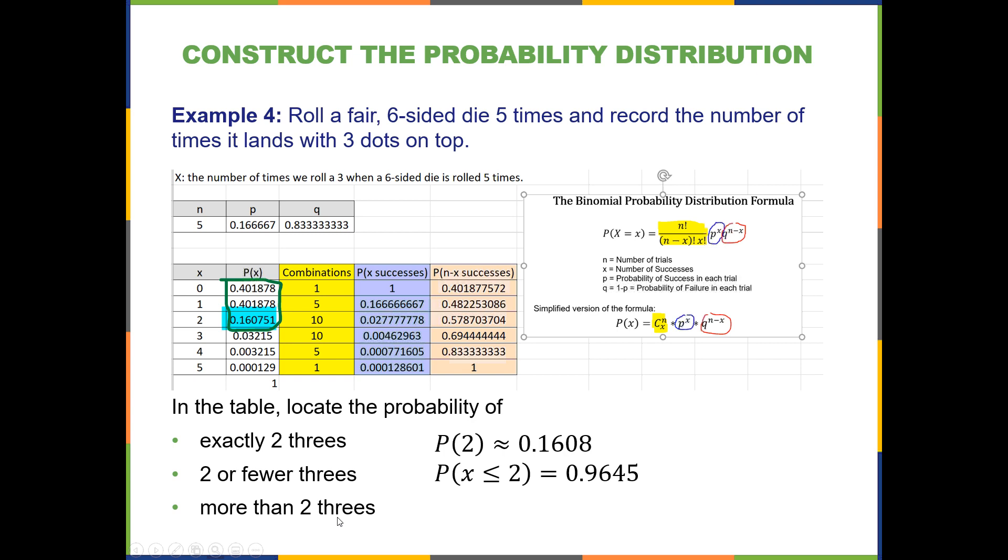Now the probability of more than two threes would be the complement of this. So you could just subtract this number from one. Or you could add together these three probabilities down here, right? So the probability of getting three successes or four or five. So we add them all together and we get our total probability, cumulative probability, right?